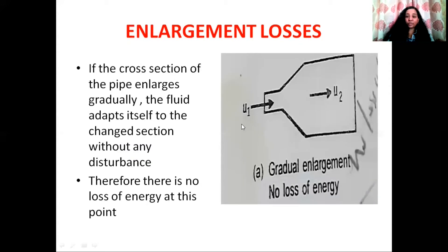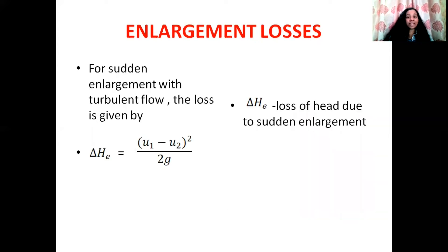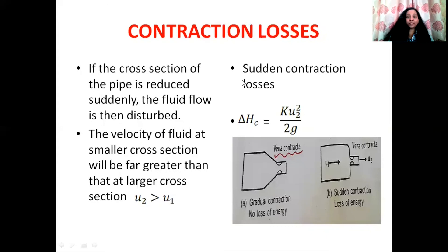Moving on to enlargement losses. When the cross-section of the pipeline enlarges gradually, the fluid adapts itself to the changed section without any disturbance, so there is no loss of energy due to gradual enlargement. However, in the case of sudden enlargement of the cross-section, a disc current will develop and that results in loss of energy. When the cross-section suddenly enlarges and fluid flow is turbulent, we can calculate the head loss using: delta HE equals (U1 minus U2) squared divided by 2G, where HE is the loss of head due to sudden enlargement.